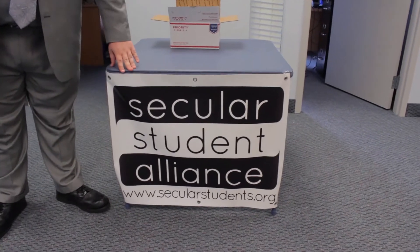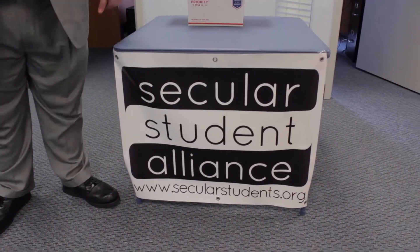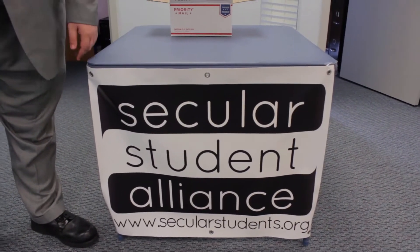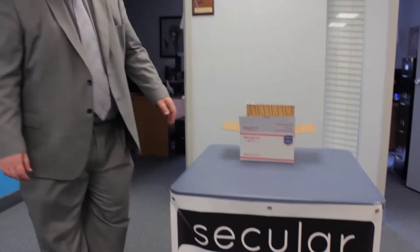To start off with, we have this beautiful vinyl banner here that you can use on the front of your table. If your group uses the Secular Student Alliance name, you can get one of these free. Otherwise, you can buy one on our store for $25. It's a great addition to your tabling supplies.